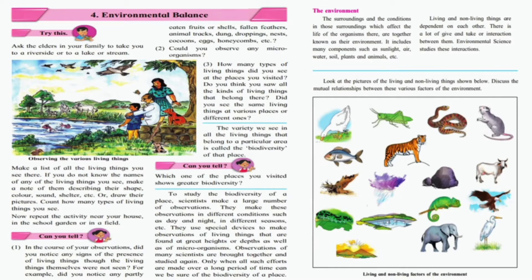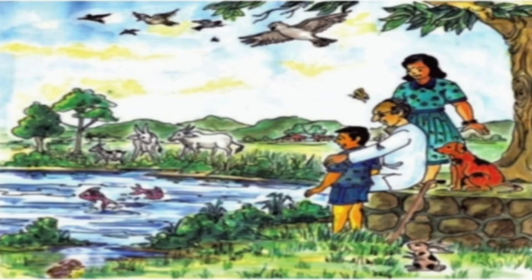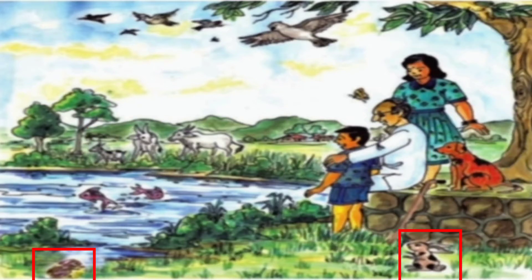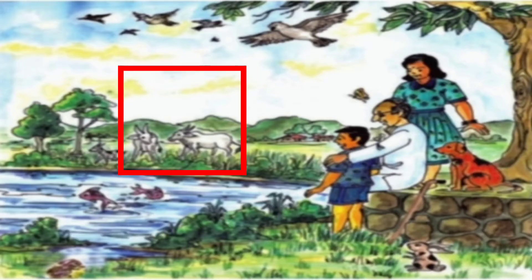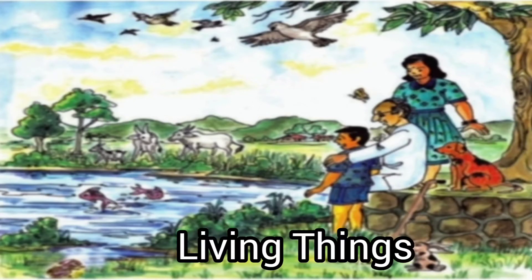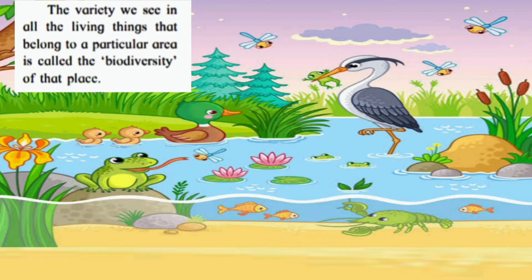Have you ever visited a lake? Let me take you there. Look at the picture and observe it carefully. Now tell me, what are the living things you can see here? We can see human beings, dog, rabbits, butterflies, birds, fish, oxen and trees. So these are the living things. The varieties we see in all the living things that belong to a particular area is called the biodiversity of that place.